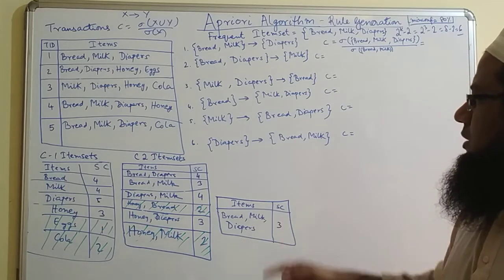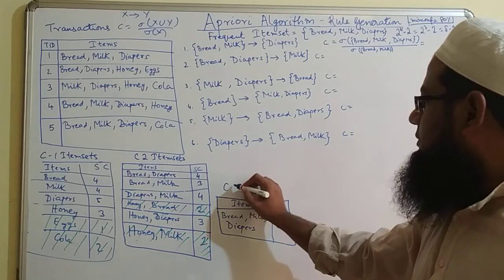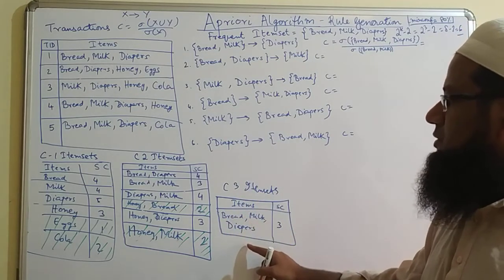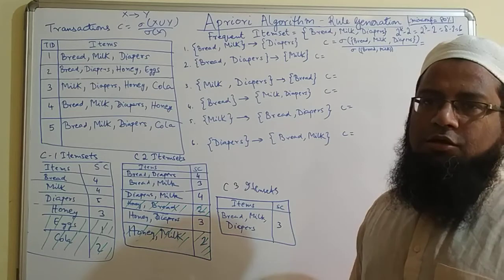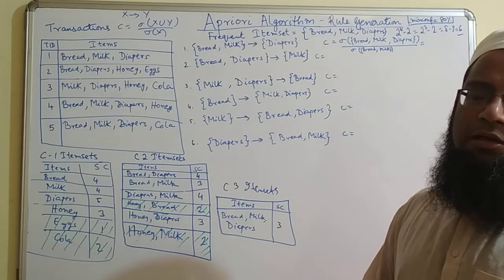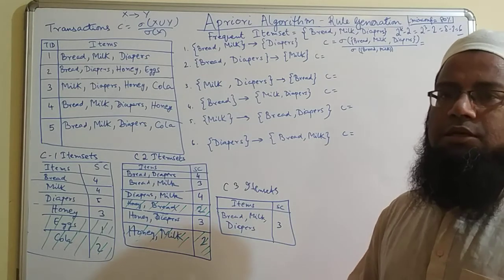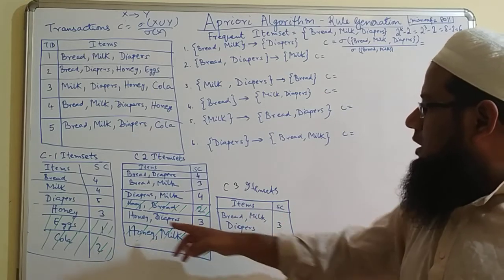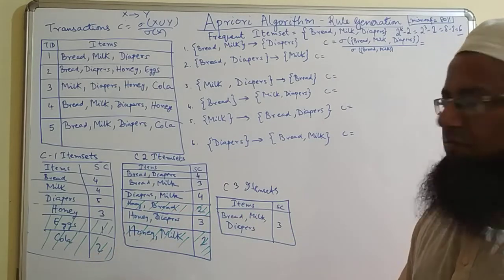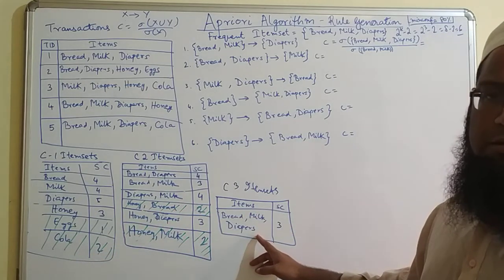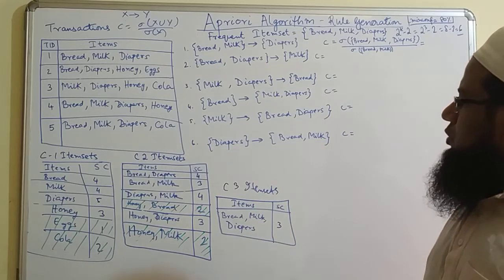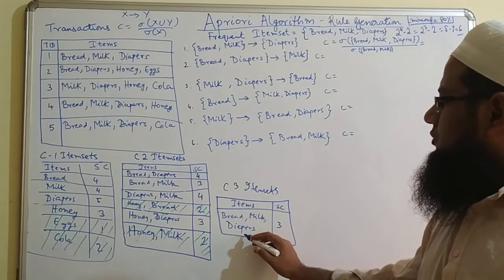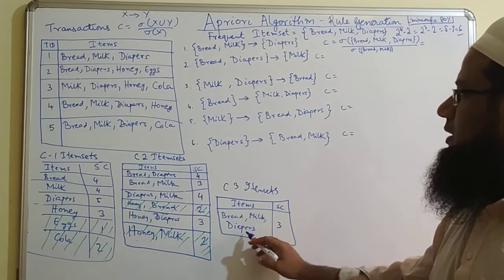Then we formed the candidate three-item set. We are left with bread, milk, and diapers. Since honey is infrequent, the Apriori principle states that if an item set is infrequent then all its supersets will also be infrequent — so we cannot include honey. After step three, we found the frequent item set: bread, milk, and diapers.